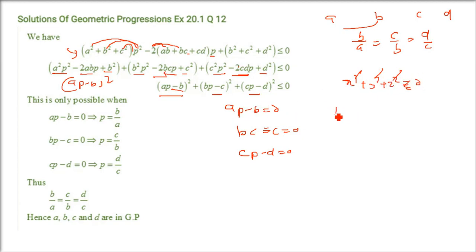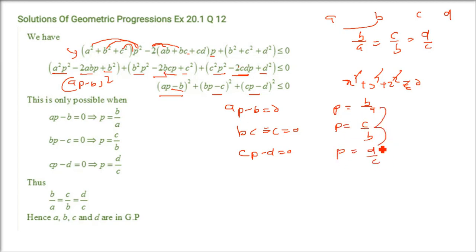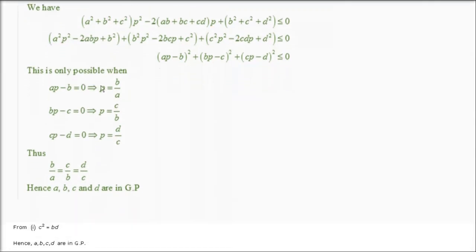From these: P = B/A, P = C/B, and P = D/C. Since all equal P, we get B/A = C/B = D/C. This proves A, B, C, D are in GP.